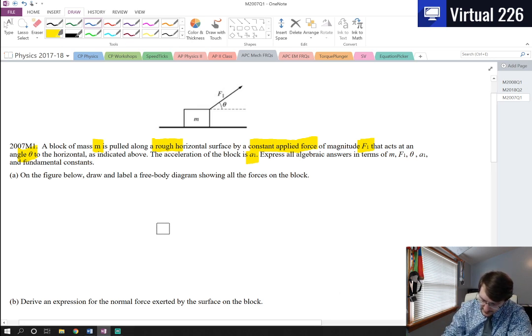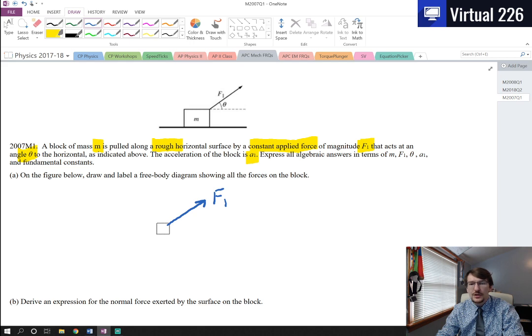There's only four forces we need to worry about here. The first is the actual force F1, which is pulling the block. And it is a very important thing here that you do not put the components. Many of you are going to want to put the F1 in the X direction and the F1 in the Y direction. Do not do that. They are just asking for the forces on the block, not the force components. And if you draw the force components, you're adding extra forces in, and they will dock you points on that. So there's F1.